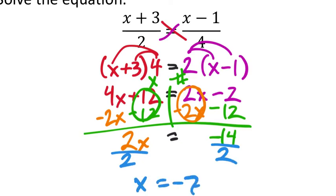Well, let's check. This one should be pretty easy. Negative 7 plus 3, that'd be negative 4 divided by 2. That's negative 2. So I know I get negative 2 on this left side. What about negative 7 minus 1? That's negative 8 divided by 4. That's negative 2. So it checks off that it is true. Now I know that x equals negative 7.